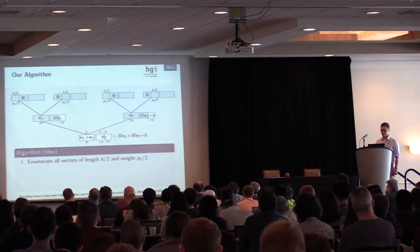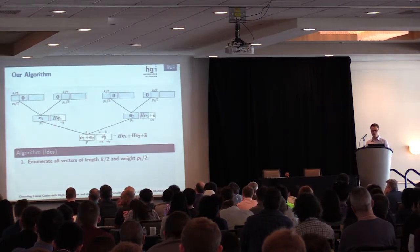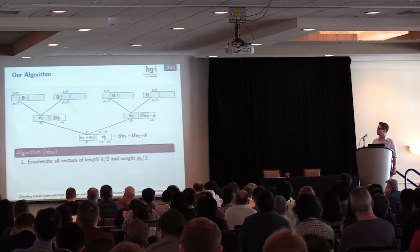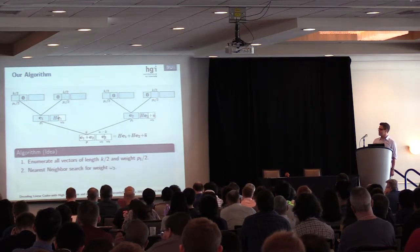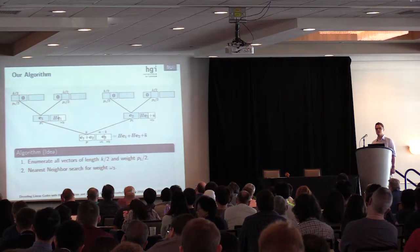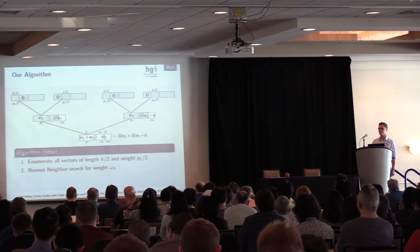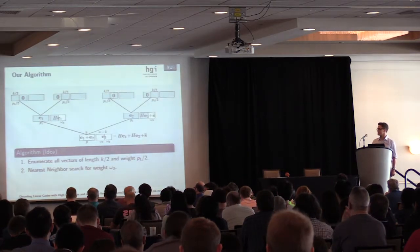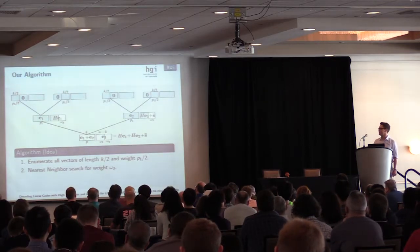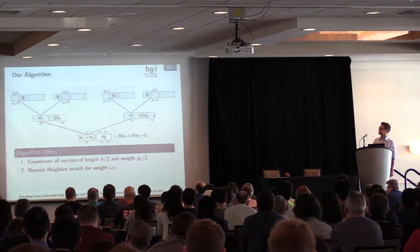Let's recall the steps our algorithm does now. First of all, we enumerate. We enumerate vectors of length k over 2 and weight p1 over 2, and we store them like in a tree graph into four lists. Then we run a nearest neighbor search for weight omega 3. Nearest neighbor search is essentially an algorithm which gets two lists as input and searches for vectors which have some specific Hamming distance. We search for vectors which have the correct Hamming distance for our two lists to construct the right e1 and e2.